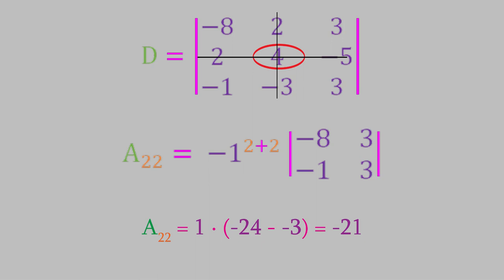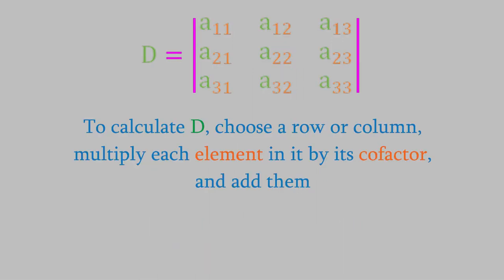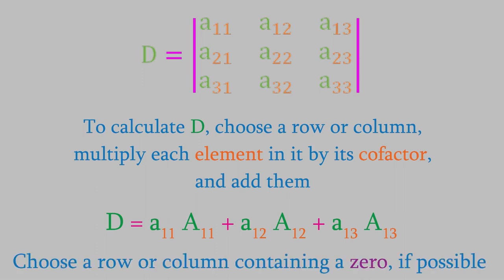So why do we need to know about cofactors? It turns out that the solution of a determinant is given by choosing any row or column in the determinant, and multiplying each element in it by its cofactor, then adding them together. It doesn't matter which row or column we choose — choosing any of them will give the same result. For that reason, it's always a time-saver to choose a row or column that has an element equal to zero, since the corresponding term will then drop out of our calculation.